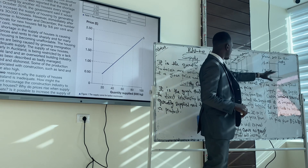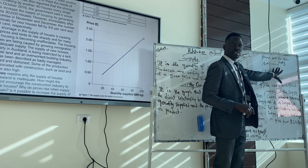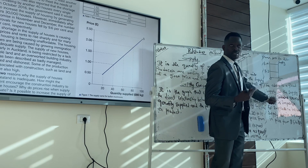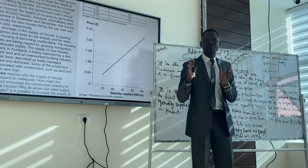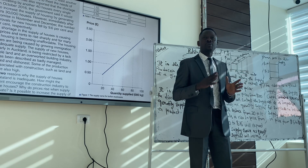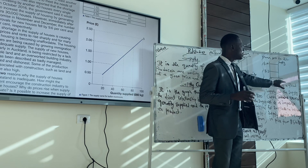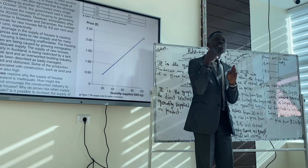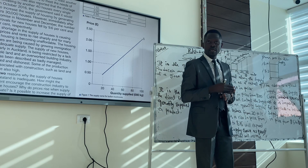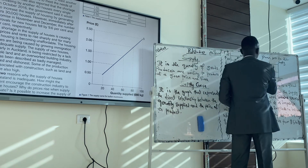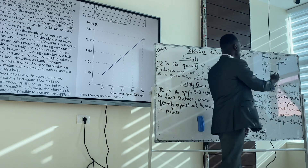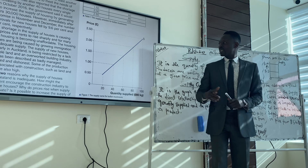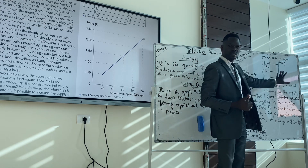Then we have fixed supply. We call it fixed because the supply curve is vertical. It is vertical because there's a change in price, but it does not bring about a change in the quantity supplied. If you have a fixed supply, the price will change but the quantity supplied remains the same. Producers are unable to increase their supply despite a change in price from $5 to $10, and even a falling price from $10 to $5 would still keep quantity supplied at 20.